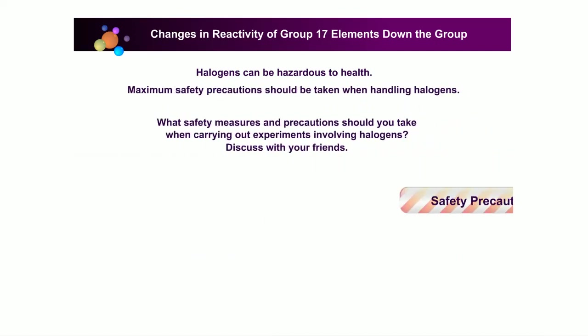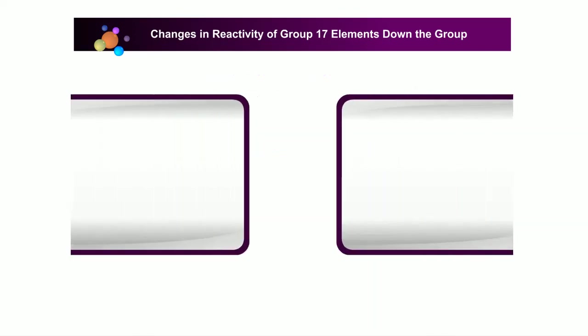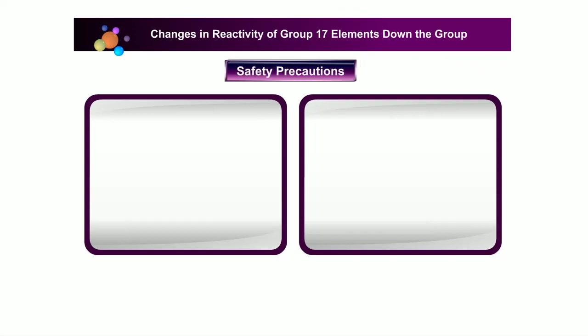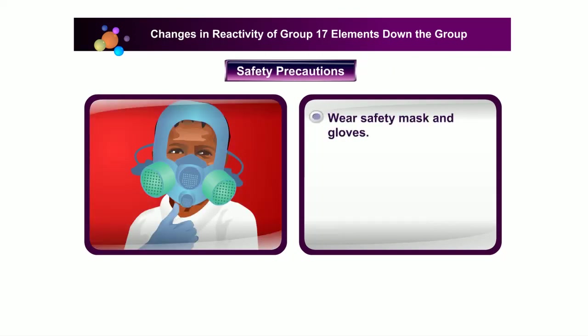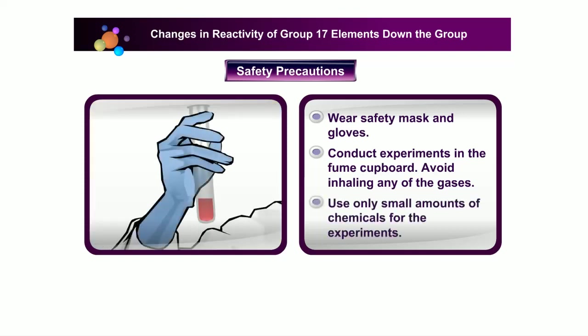When carrying out experiments dealing with halogens, wear safety masks and gloves. You should conduct these experiments in the fume cupboard, try to avoid inhaling any of the gases, and take care to use only a small amount of chemicals for the experiments.